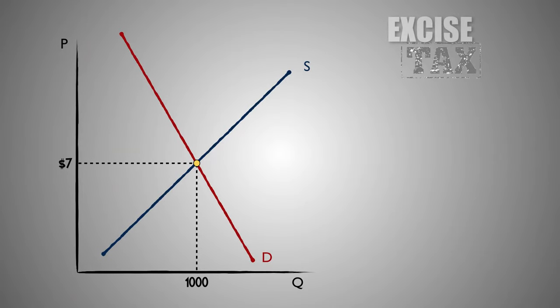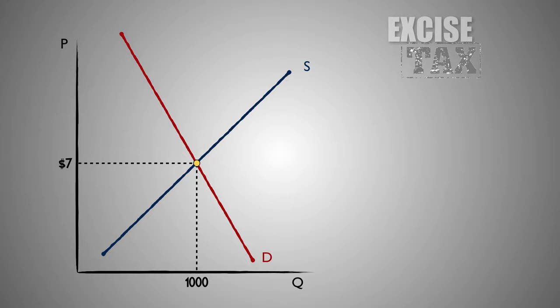Here we see the market for Good F. Assume that Good F is a product required to fulfill a need and is therefore very important to consumers. As a result, demand for Good F is generally inelastic. Supply and demand in the market for Good F has established an equilibrium price of $7 and an equilibrium output of 1,000 units. Then, the government imposes a $3 per unit excise tax on firms that produce Good F, meaning firms will be required to pay the government $3 for every unit of Good F that they produce. In order to minimize their tax burden, firms will scale back the production of Good F, decreasing the supply of Good F in the market.